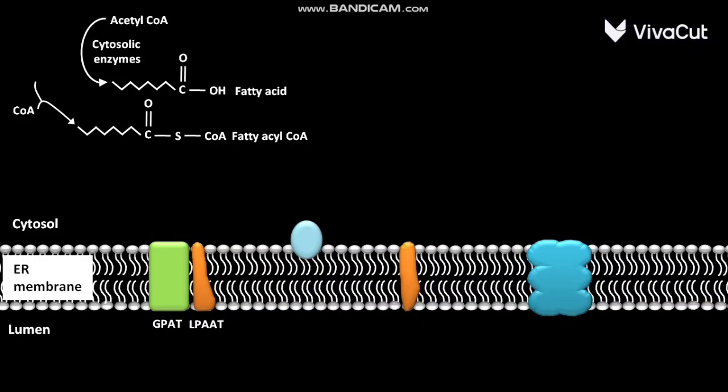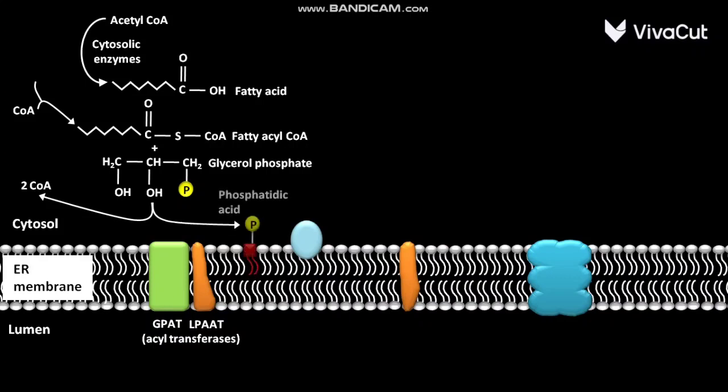The GpA-T and LpA-A-T are acyltransferases. The fattyacyl-coenzyme A and glycerol phosphate react with each other in the presence of GpA-T and LpA-A-T to form 2-coenzyme A and phosphatidic acid. The smooth ER membrane has another enzyme called phosphatase.